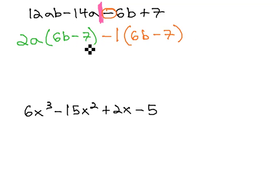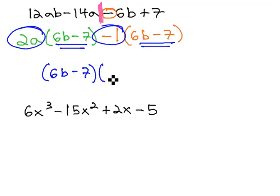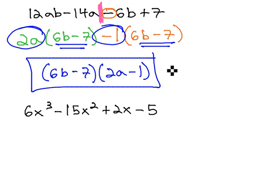Sure enough, when we use this method, we do end up with matching binomial factors. 6b minus 7 becomes our first factor, and 2a minus 1 becomes the next factor. We have now factored our polynomial.